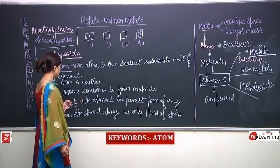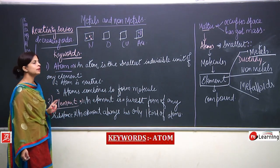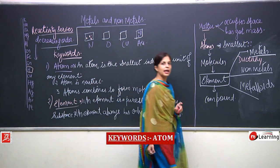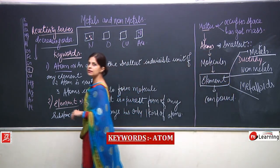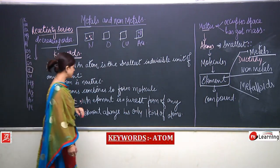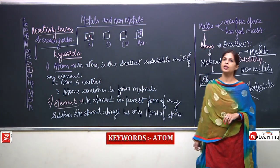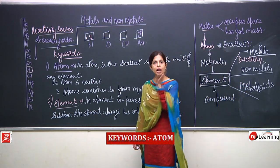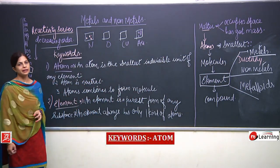To summarize: an atom is the smallest indivisible unit of an element and is neutral; atoms combine to form molecules. An element is the purest form of any substance, always has one kind of atom, and those atoms are responsible for giving characteristic features to that element.